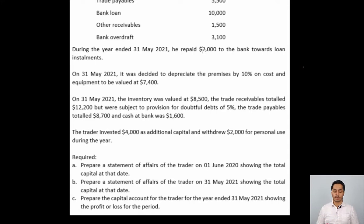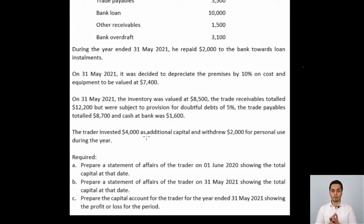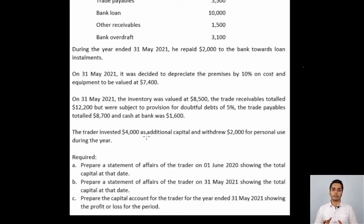When we prepare the closing statement of affairs we'll go through all those details. The last part of the question also tells us about additional capital and drawings, which will be used to calculate the profit for the year once we have the opening and closing capital. Part A requires us to prepare the opening statement of affairs, part B the closing statement of affairs, and part C requires us to prepare the capital account to calculate the profit for the year.